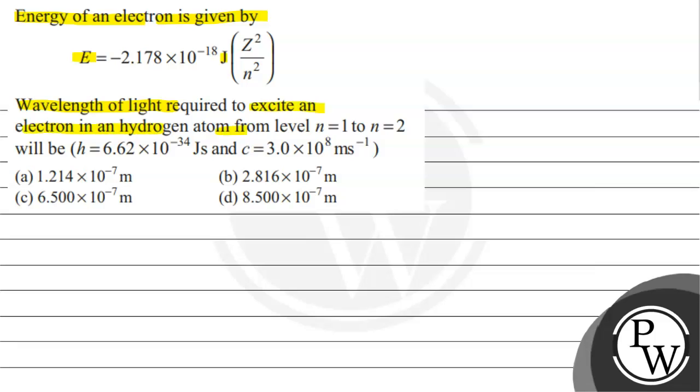in a hydrogen atom from level n=1 to n=2 will be... The key concept formula we'll use is E = -2.178 × 10^-18 × (Z²/n²) for hydrogen.